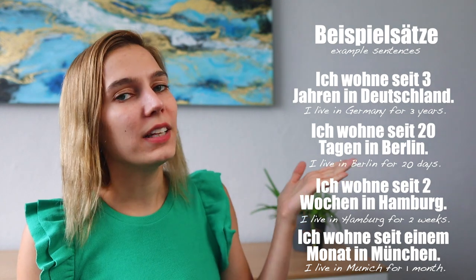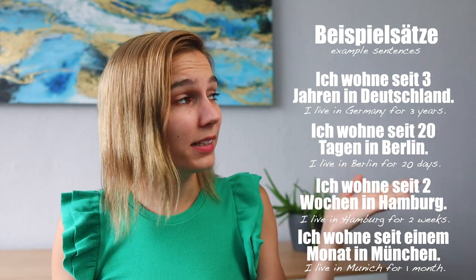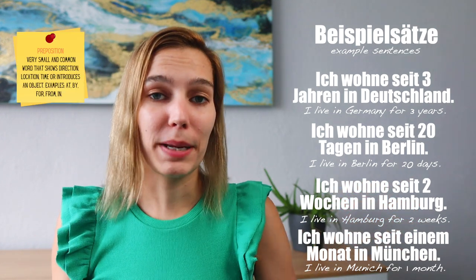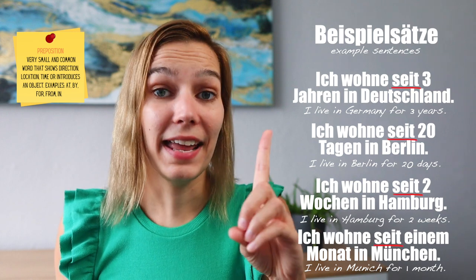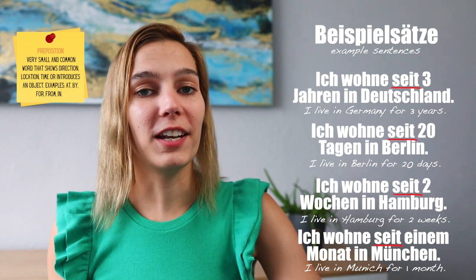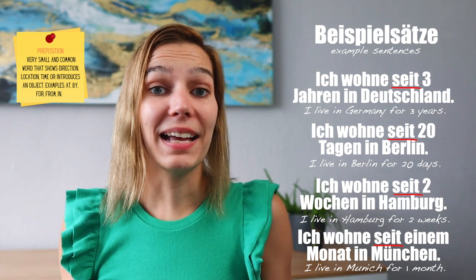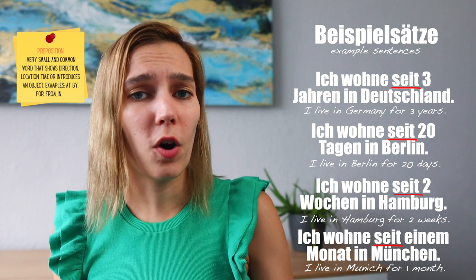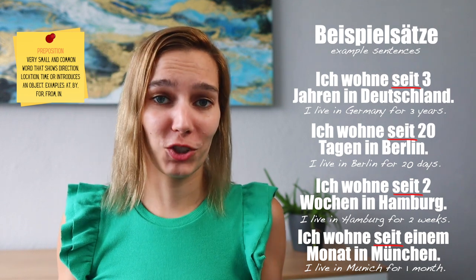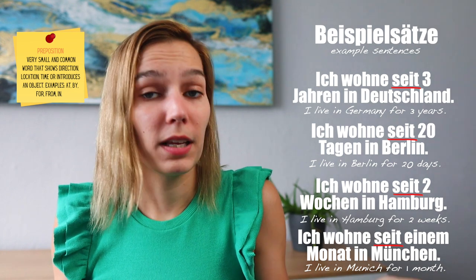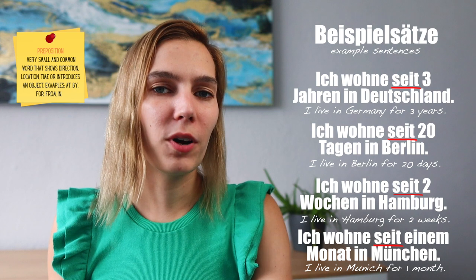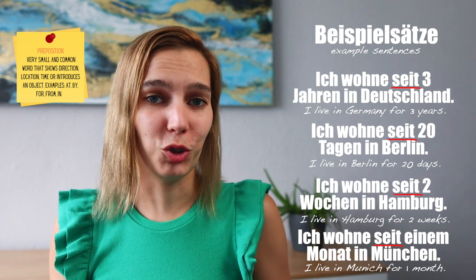Let's look at all these sentences together and see if we can find some similarities. I can tell that all these sentences use the preposition 'seit'. And we have to use 'seit' — you cannot use 'für', because 'für' in German means 'for'. But this is very important: you can't always use the same prepositions as in other languages. Sometimes it works, but sometimes it doesn't. So, here we have to use 'seit'.